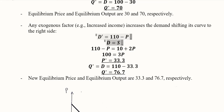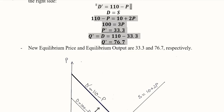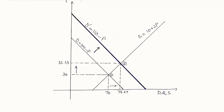The same procedure of equalizing demand and supply is applied with the new demand function. The substituted values give us a new equilibrium price and equilibrium output — you can pause the video and do the simple algebra to verify. As shown in the diagram, the initial equilibrium had a price of 30 and output of 70. After the favorable demand shift, the new equilibrium has a higher price and output extended from 70 to 76.67. Intuitively, if demand increases, price rises and equilibrium output increases.